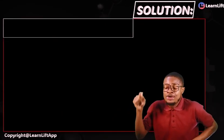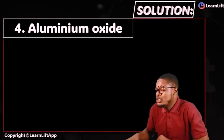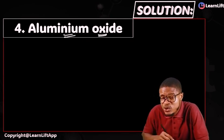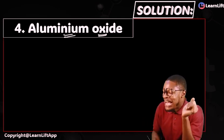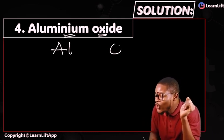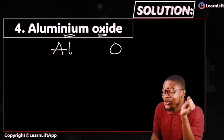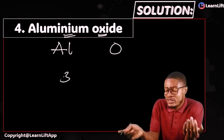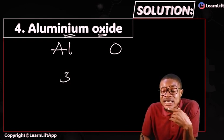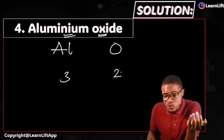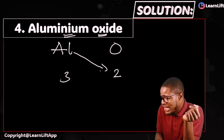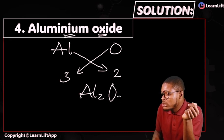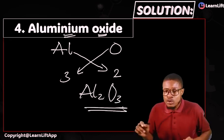Number four: aluminium oxide. Write out the elements — aluminium and oxygen. Aluminium is in group three — valency is three. Oxygen is in group six — valency is two. Interchange: aluminium gets valency two, oxygen gets valency three, giving Al2O3. This is your aluminium oxide. Simple — you're done.